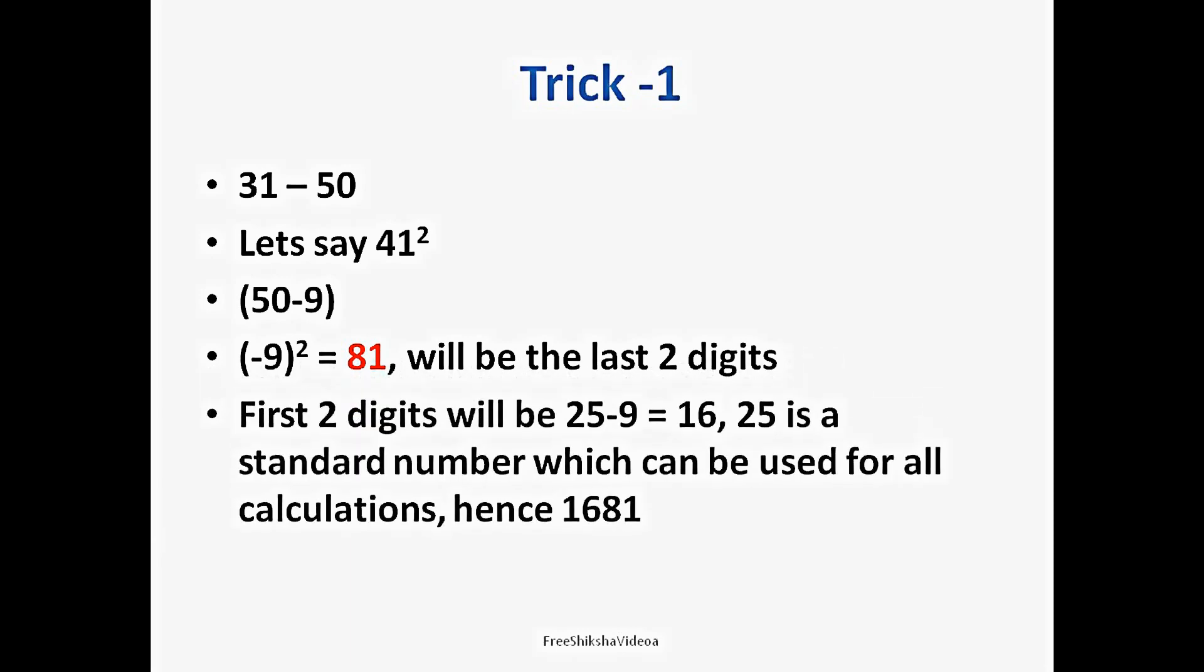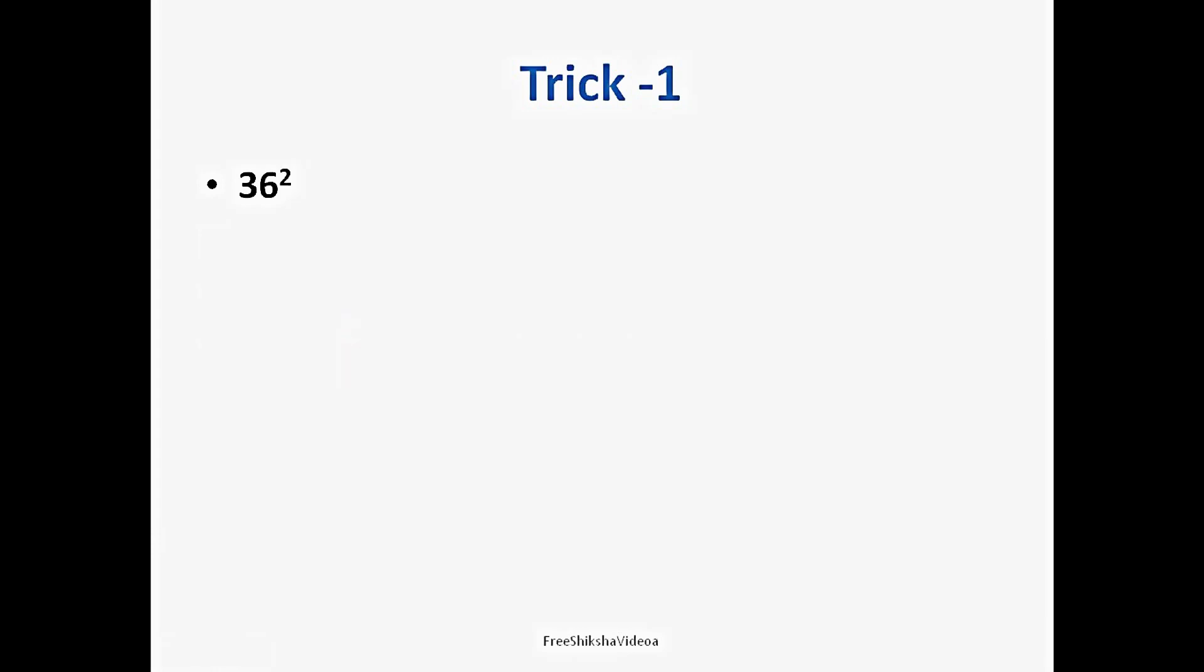So 81 will become the last two digits of the square of 41. Moving forward, the first two digits will be 25 minus 9, which is equal to 16. And 25 is basically taken as a standard number which can be used for all calculations between 31 to 50. Hence the number will become 1681. Hope that is clear. 16 comes from 25 minus 9. 9 was the number subtracted from 50, and 81 came from minus 9 square.